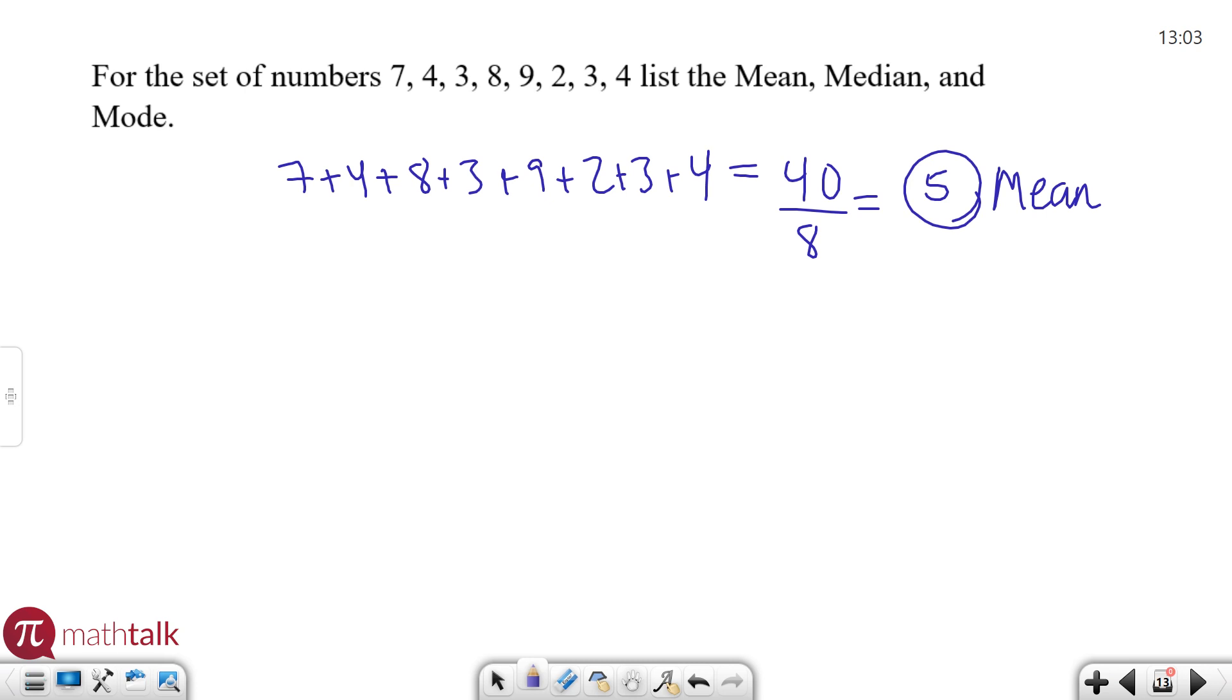The median. Median is your middle number when organized from least to greatest. So I need to put these in order from smallest to largest. You got 2, 3, 3, 4, 4, 7, 8, 9. And I need to figure out which one is the middle. I cross them off one at a time on each side. Now there's 2 in the middle here. Sometimes you get two middle numbers. When that happens, all you do is add them up and divide by 2. In this case, they're the same number, so your median is going to be 4.